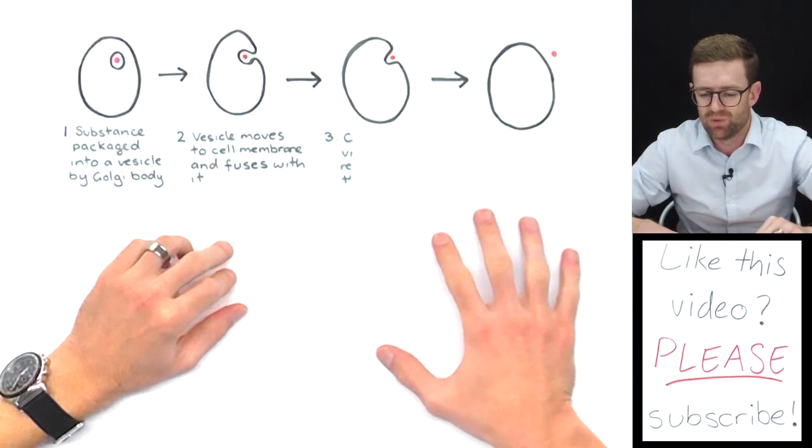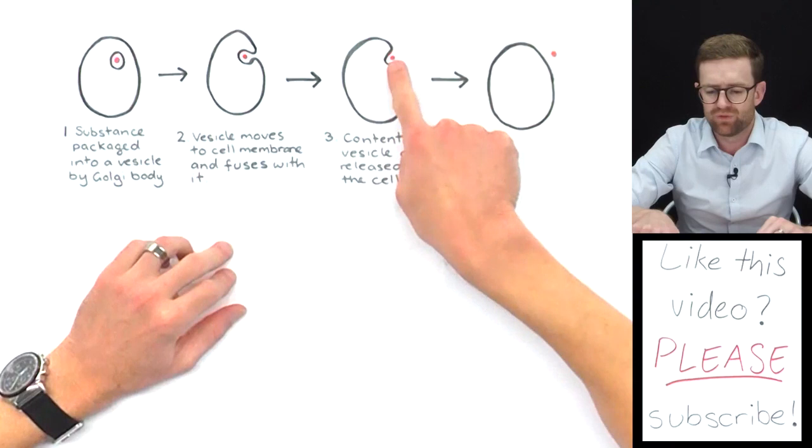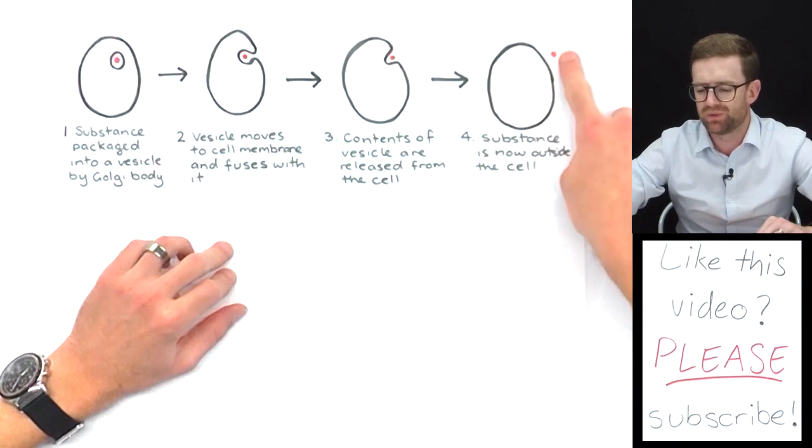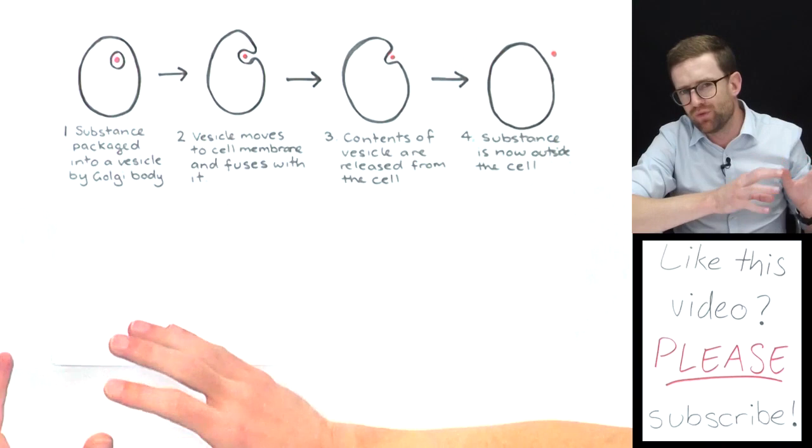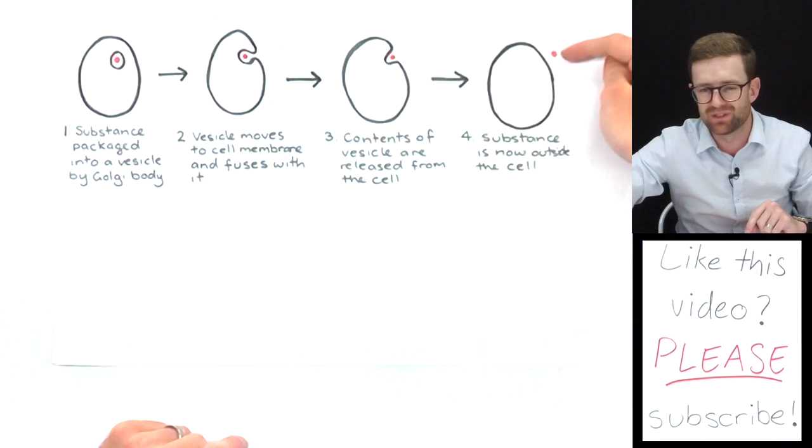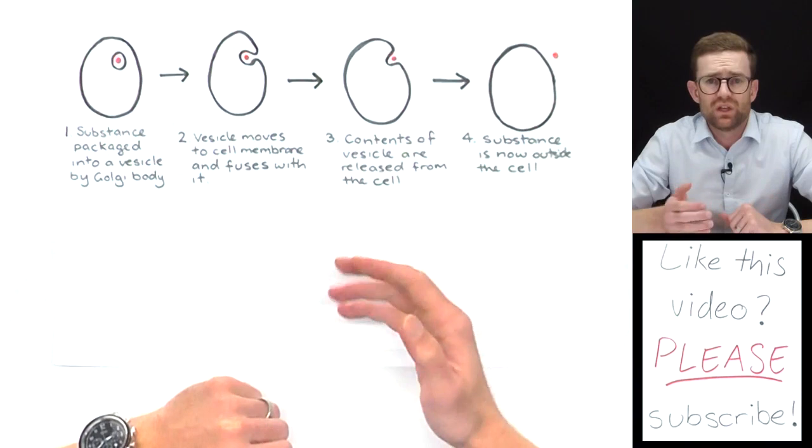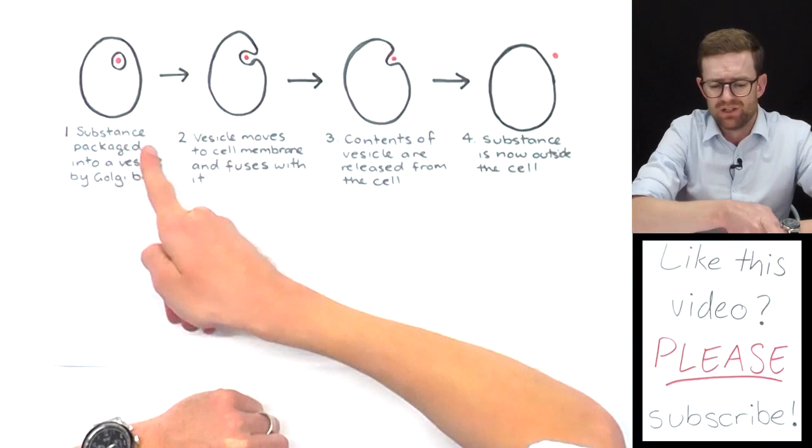The contents of the vesicle are beginning to be released from the cell and finally we'll finish with the substance now completely outside of the cell. As I said, it's the reverse of the endocytosis process. If you are asked to draw a diagram and describe what happens in exocytosis, you can use these four stages and these simple diagrams and descriptions to explain what's happening really clearly.